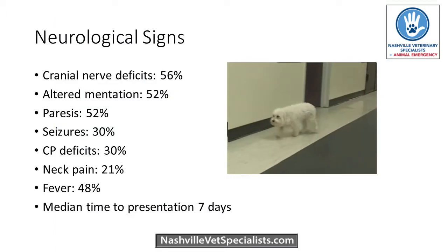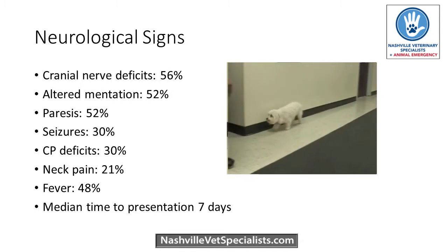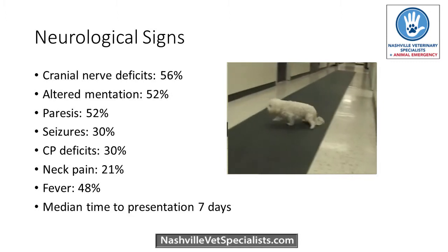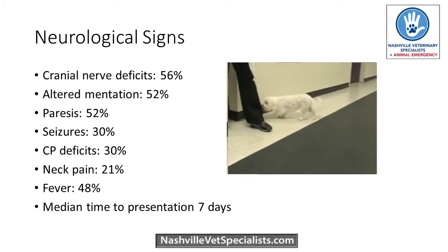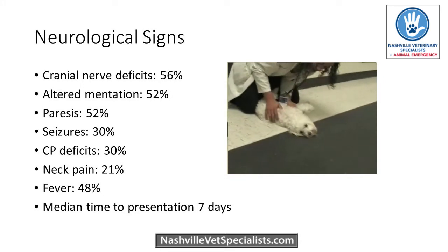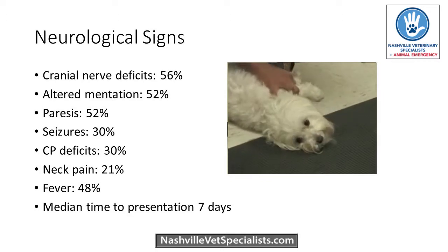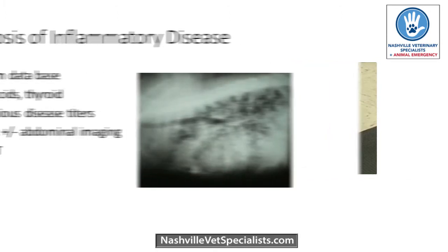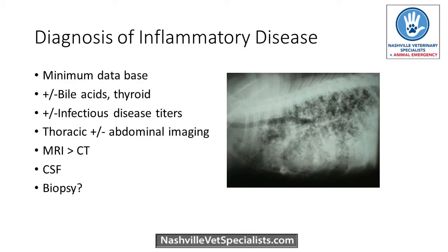The most common signs seen in dogs with inflammatory disease depend on what part of the nervous system is involved, and often it's multiple parts. We can see neck pain in a lot of these patients, and it doesn't always mean there's cervical involvement — you can see it with intracranial disease due to increased pressure and stretching of the meninges. When these patients come in, you'll want to do a minimum database to help rule out other causes of neurological signs, and the majority of these dogs will have normal basic bloodwork.